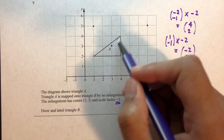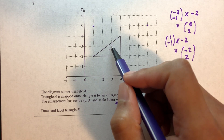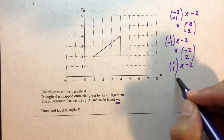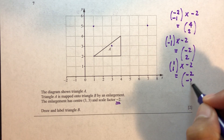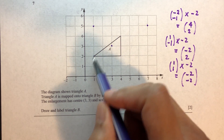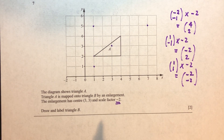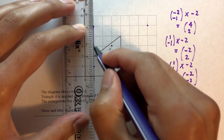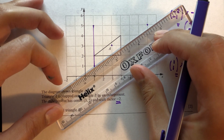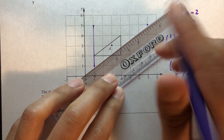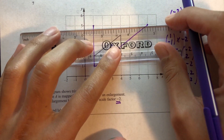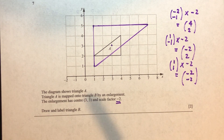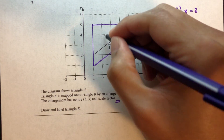For the last point: from center (3,3), move right by 1 and up by 1, giving vector (1, 1). Multiplying by scale factor minus 2 gives (minus 2, minus 2). From the center, move 2 left and 2 down. Joining all three image points gives triangle B, the image of triangle A under this enlargement.